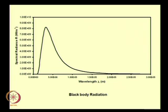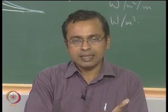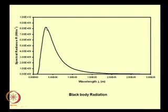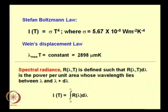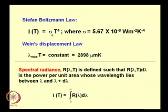The two points we mentioned — that intensity goes up with temperature and that the maximum wavelength decreases with increase in temperature — are captured by two equations which fit the data. The first is the Stefan-Boltzmann law, which says that the total intensity associated with the blackbody at a given temperature T equals sigma T to the power 4, where sigma is the Stefan-Boltzmann constant with a value of 5.67 × 10⁻⁸ watts per meter squared per Kelvin to the power 4.